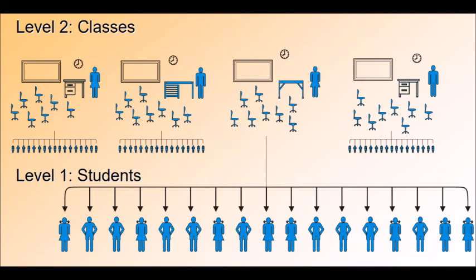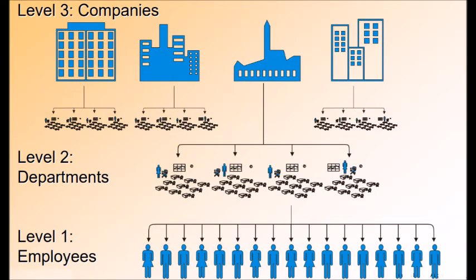This next example extends beyond two levels — it is a three-level model. At level 1 there are employees; employees are nested within departments, so departments are at level 2; and departments are nested within organizations, so organizations or companies are at level 3. This is an example of a three-level hierarchical linear model.